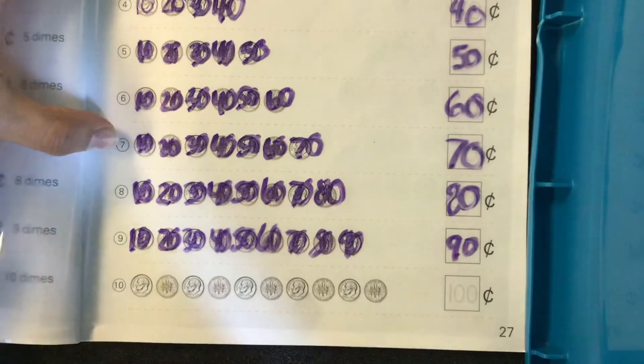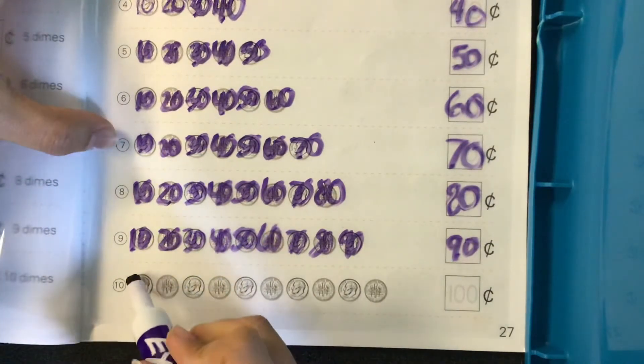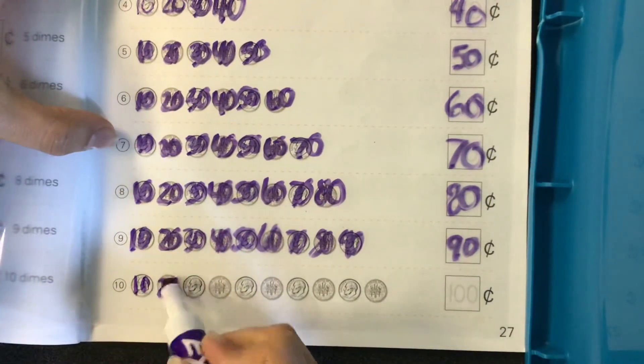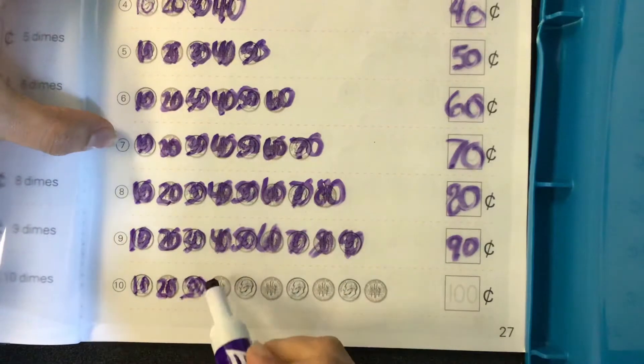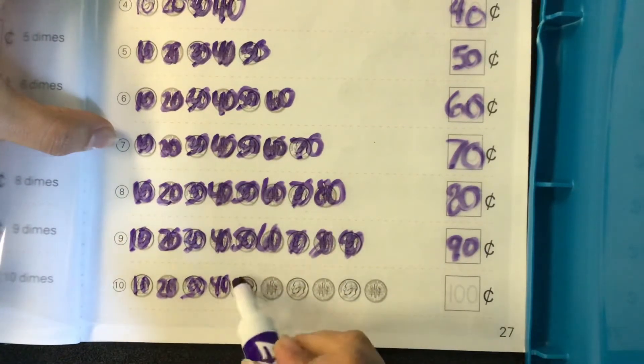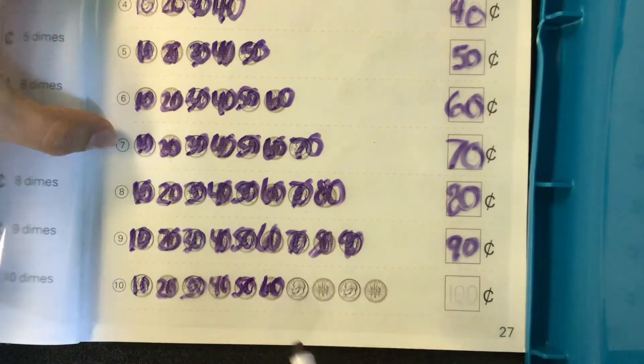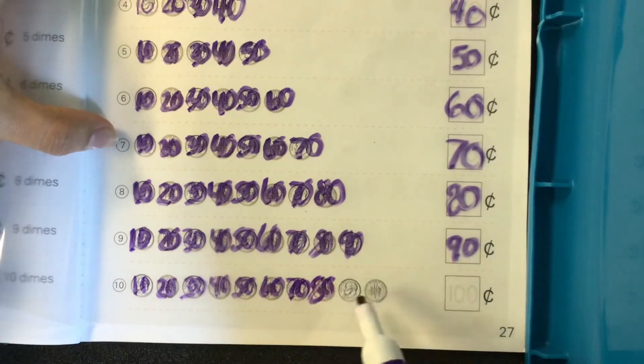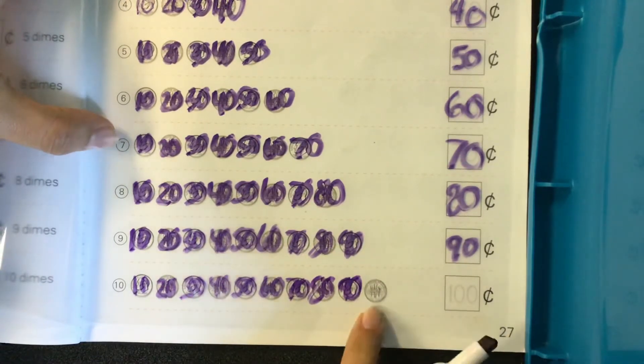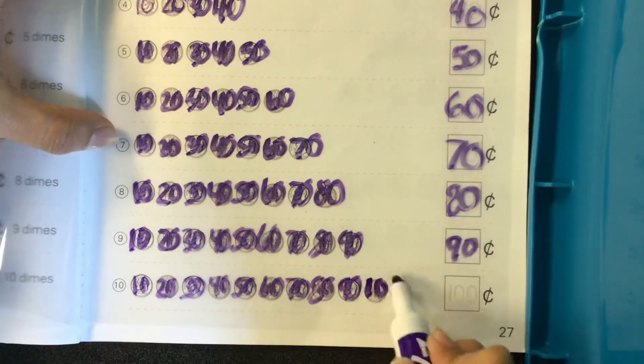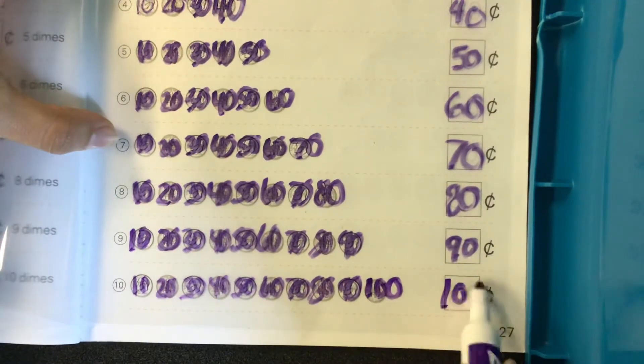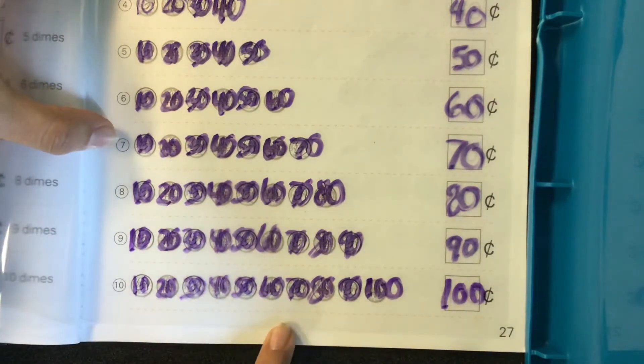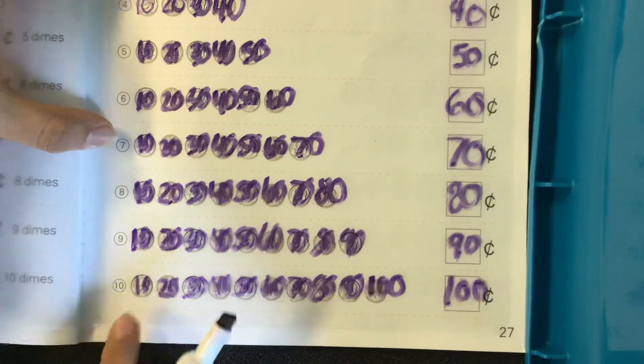And our last one. Let's skip count together. Ten, twenty, thirty, forty, fifty, sixty, seventy, eighty, ninety, and one hundred. There are a hundred cents in row ten.